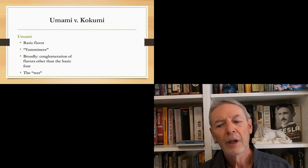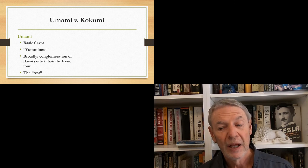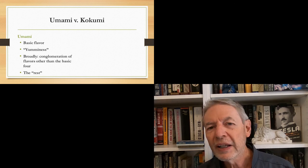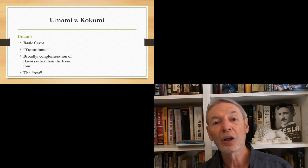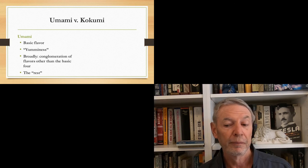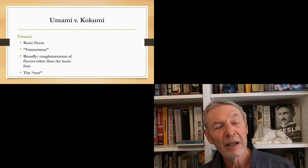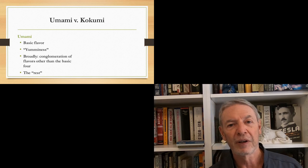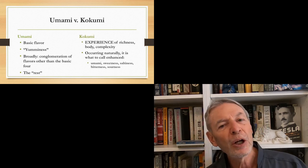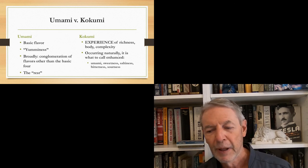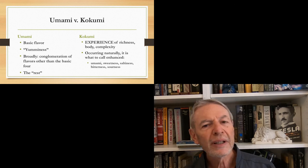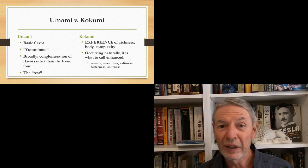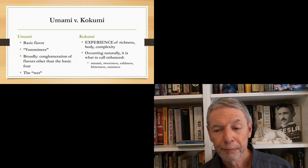So, kind of to bring this all together, umami is a basic flavor. I translate umami as yumminess. You can watch my separate video on what is umami to hear more about that. Broadly speaking, umami can be viewed as the conglomeration of flavors other than the basic four flavors. But I think an argument can be made that maybe umami is the rest of the taste, the rest of the taste beyond the four basic flavors. Now, kokumi, on the other hand, is the experience. It's the experience of richness and complexity and body. Occurring naturally, it is what to call enhanced umami, sweetness, saltiness, sourness, or bitterness.